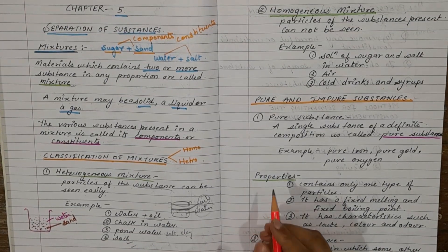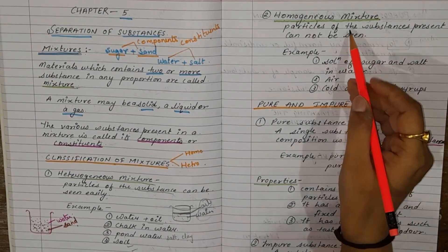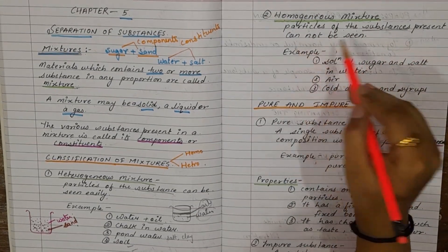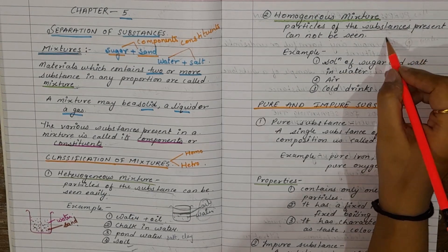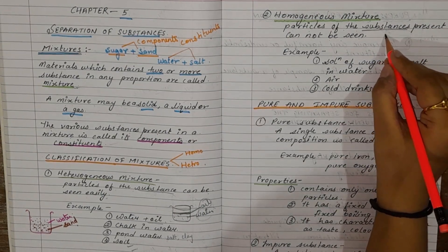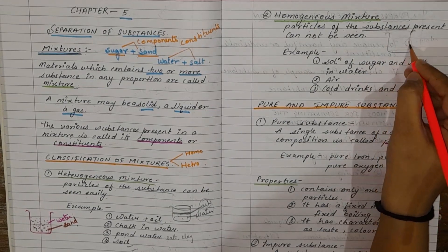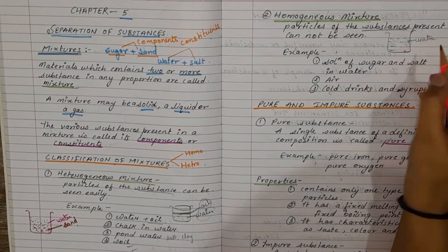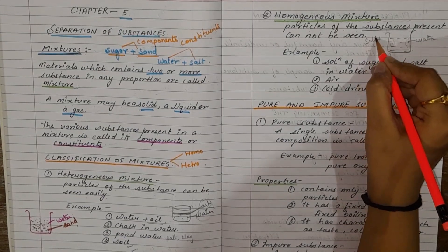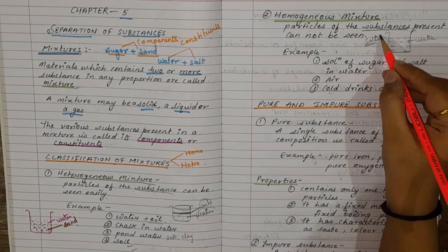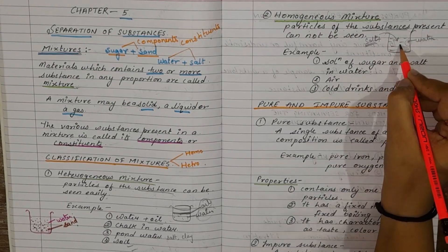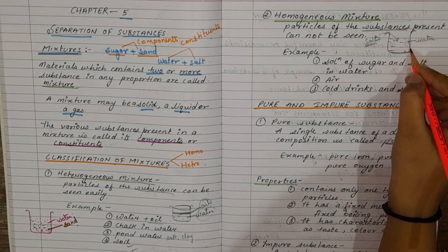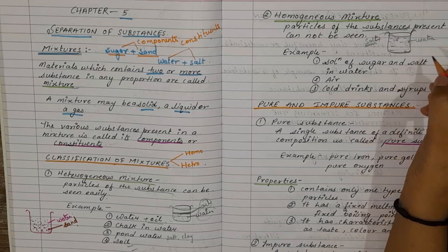Moving to the next topic — homogeneous mixture. In a homogeneous mixture, particles of the substance cannot be seen; the particles are not visible to us. For example, if I take salt and water — I add salt to the water — the salt is not visible to us. A very clear, transparent solution will be formed.